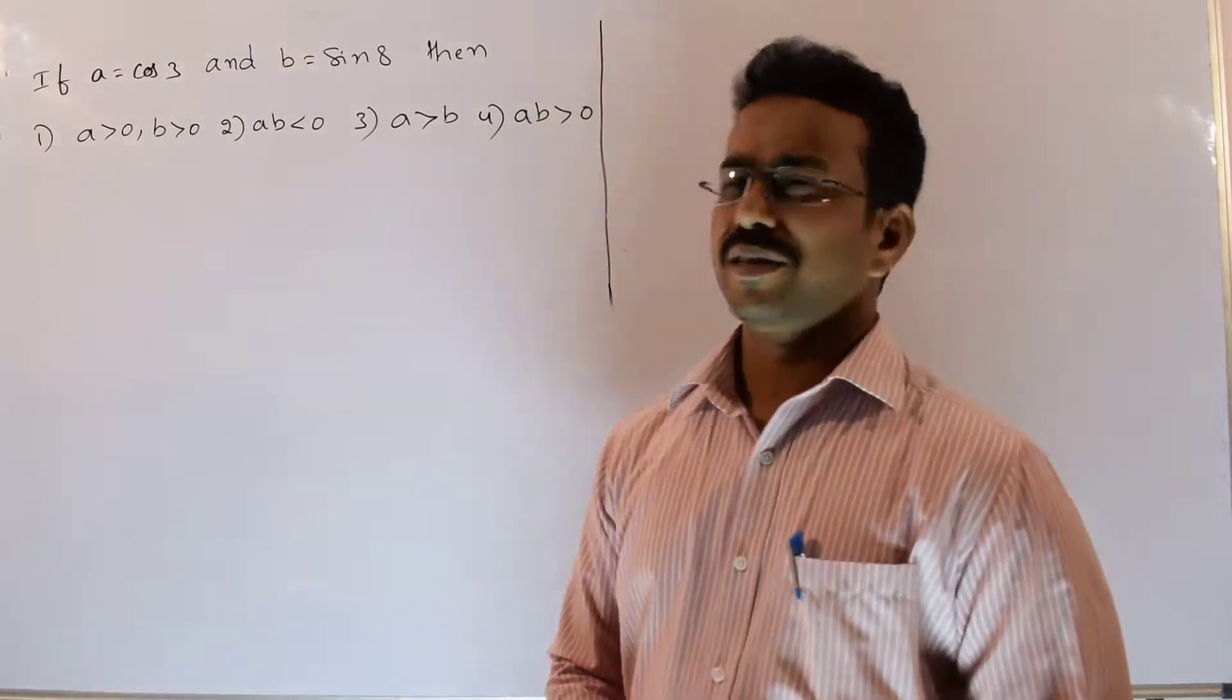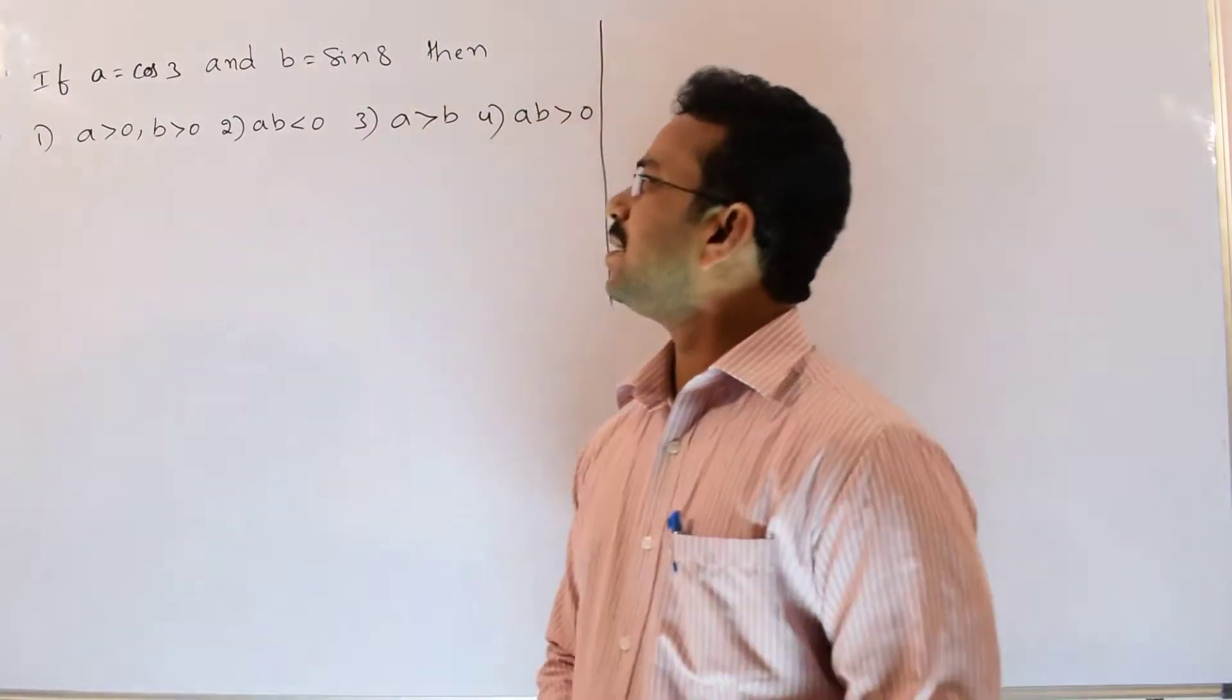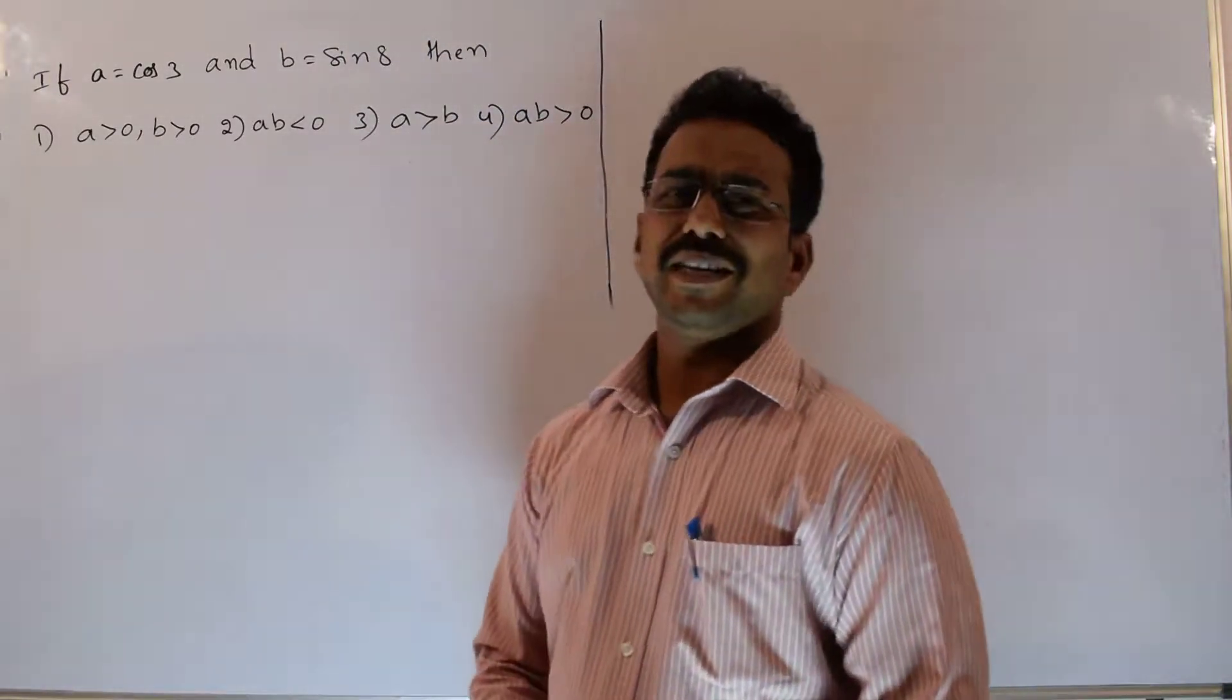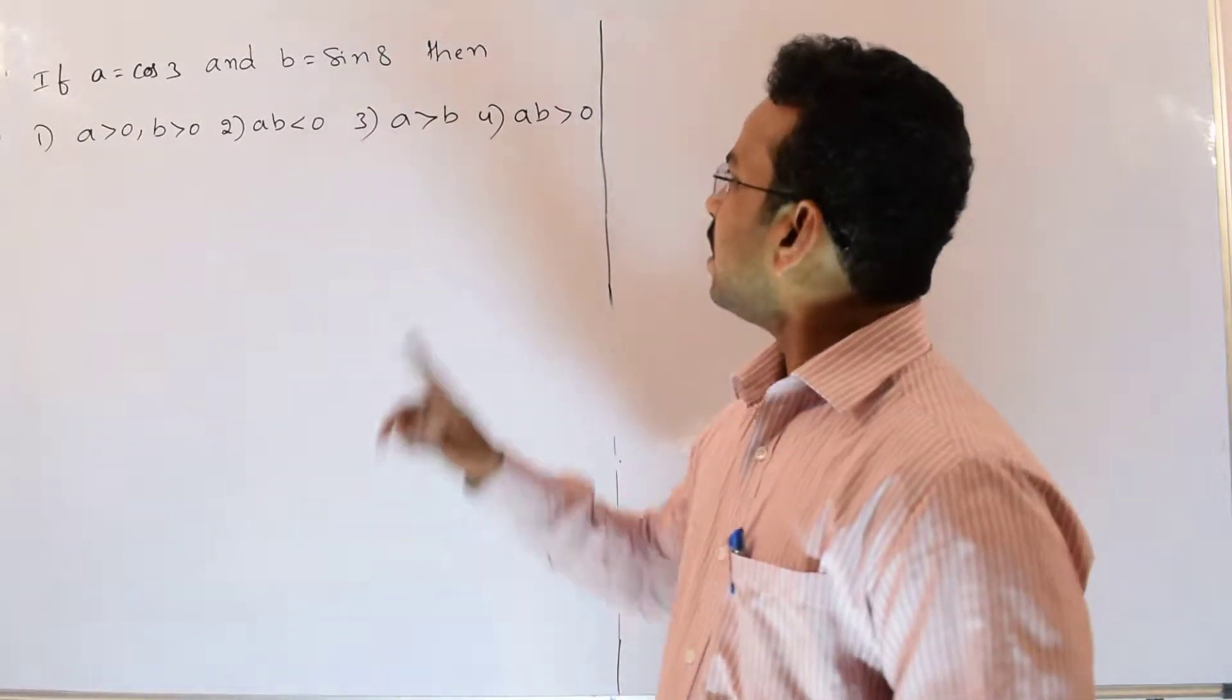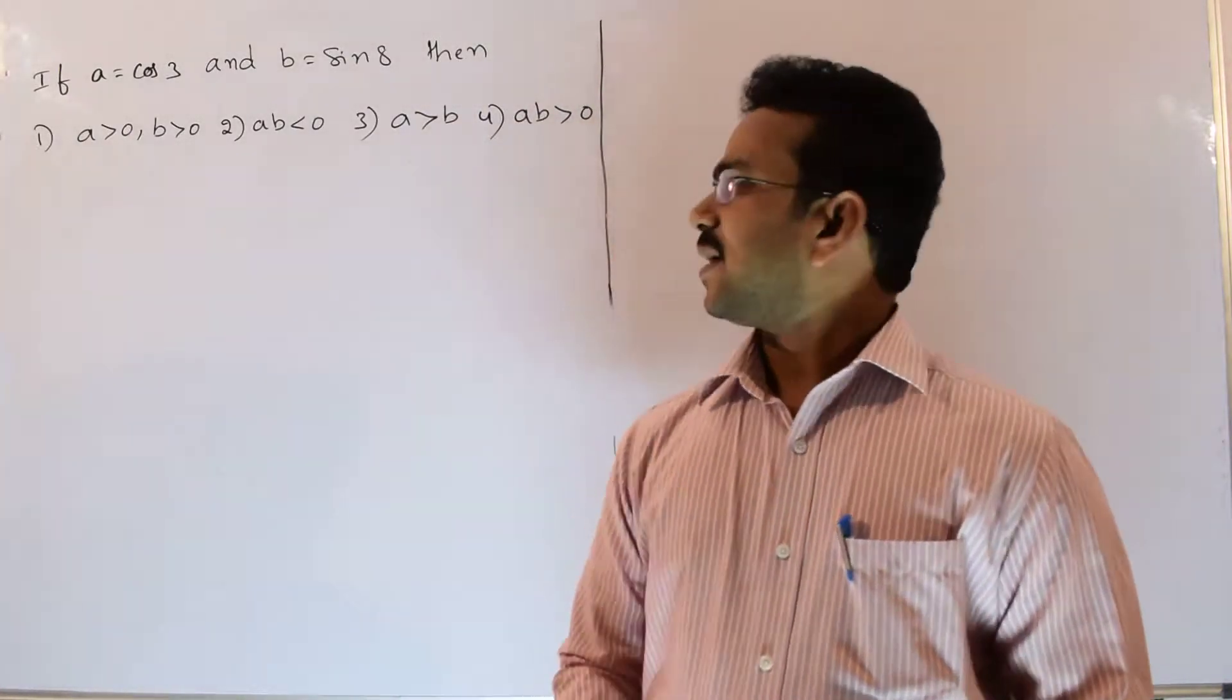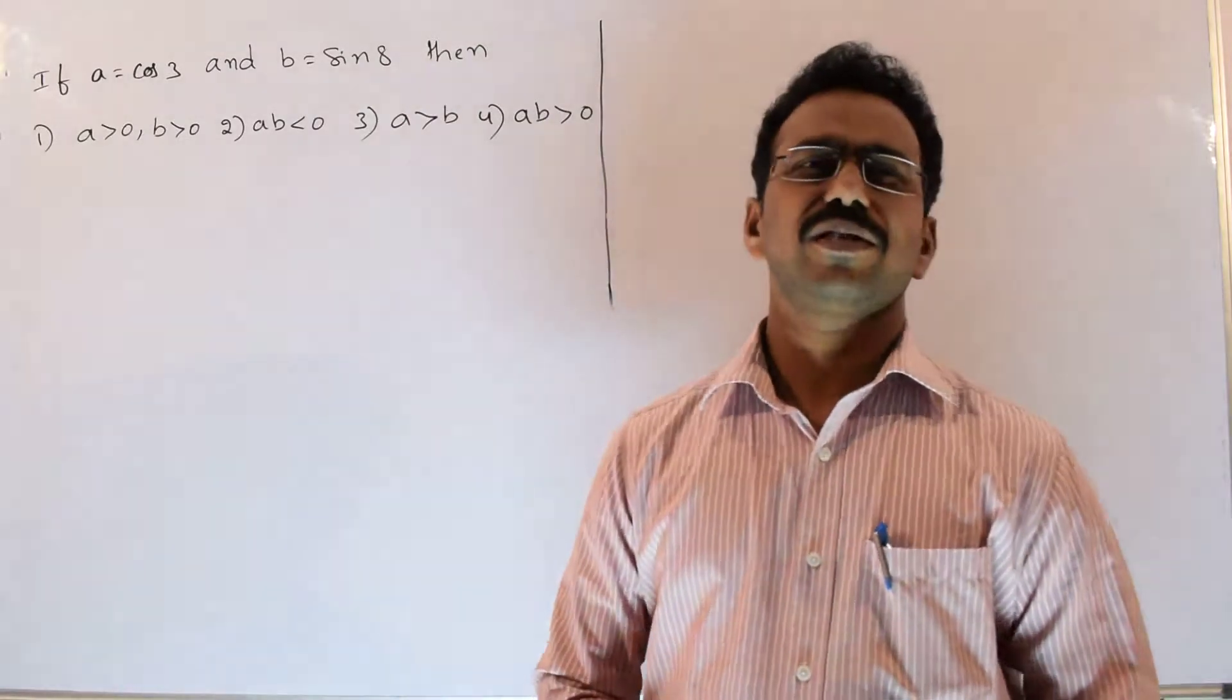Hi, let's discuss the solution of the given question. Here what is the given question? If A equals cos 3 and B equals sin 8, then you need to find which of the following condition is going to satisfy among these 4 options.